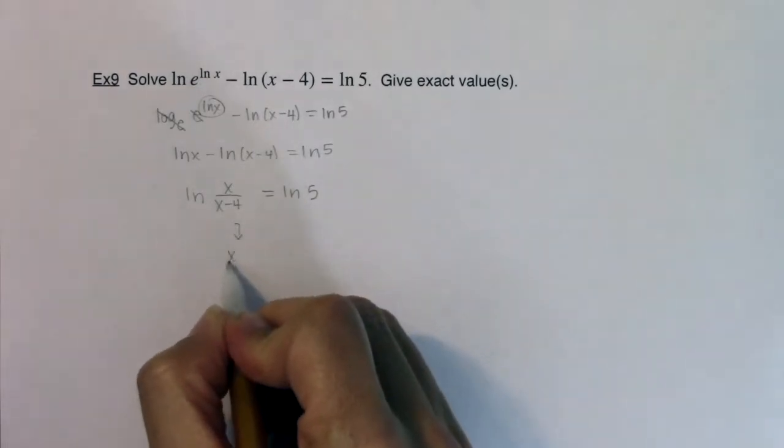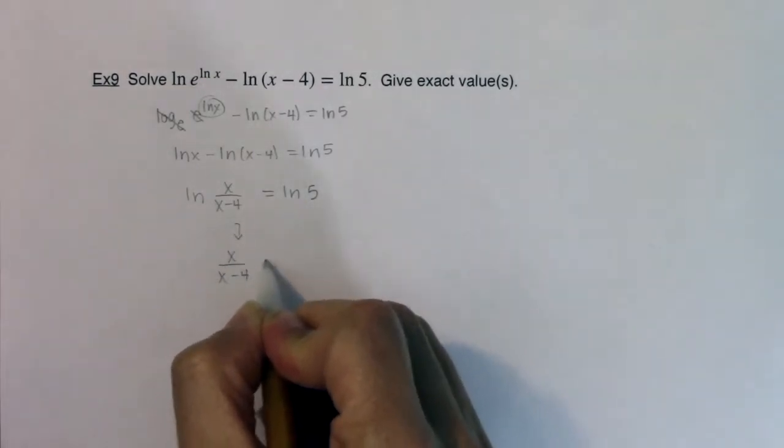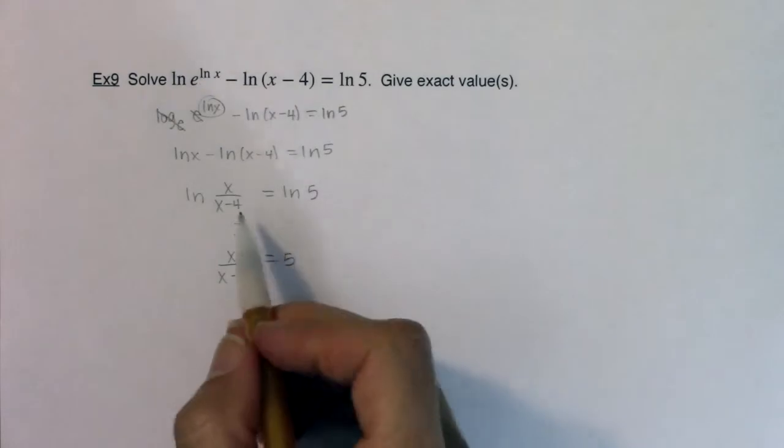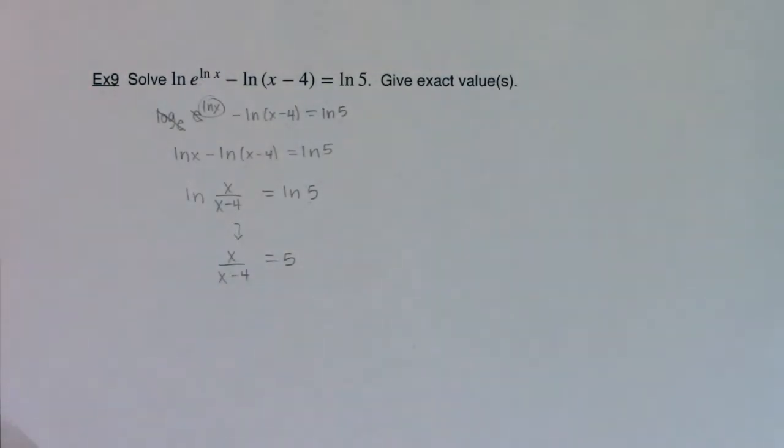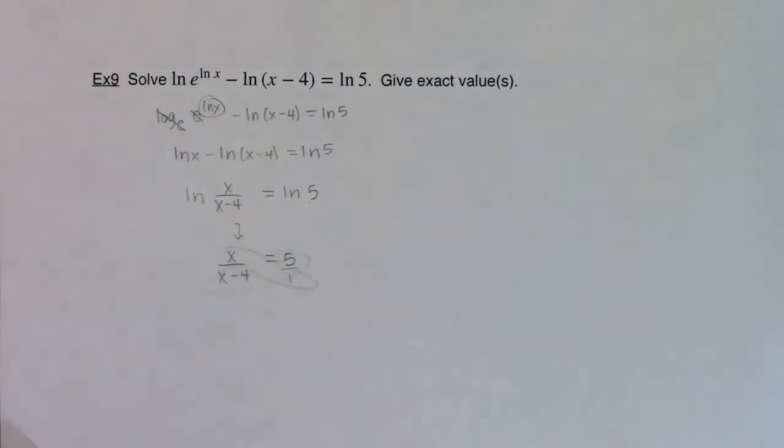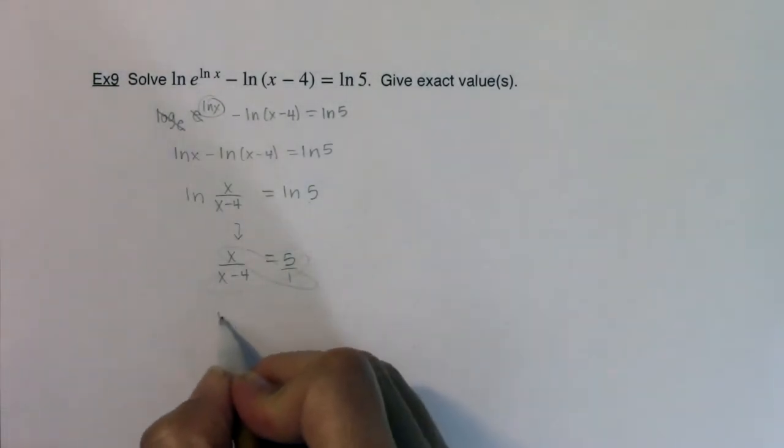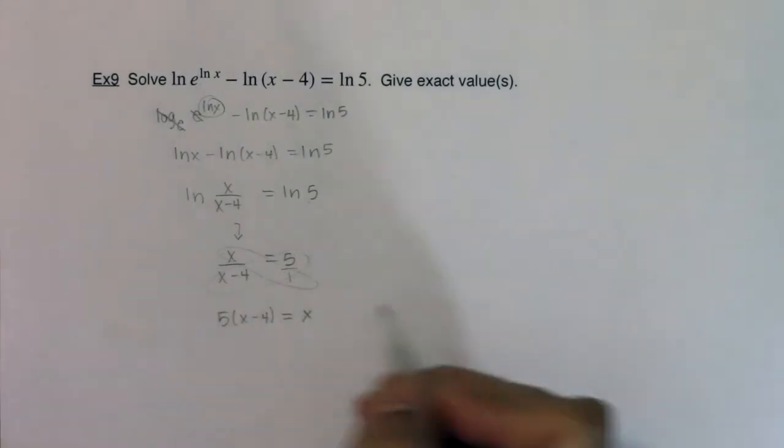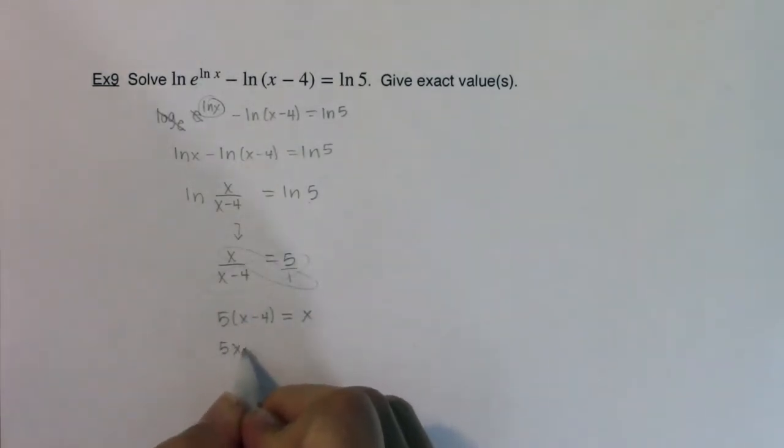This just becomes x over x minus 4 has to equal 5, right? I set the arguments equal to each other, and all of a sudden now we have a linear equation to solve. So I've got a proportion here. I'm using the LCD to get rid of the fraction, but I have 5 times x minus 4 is equal to x. So I'm looking at 5x minus 20 equals x.